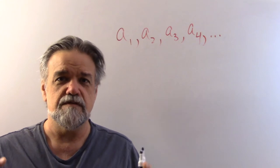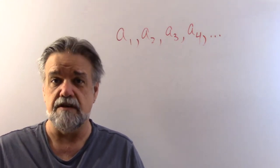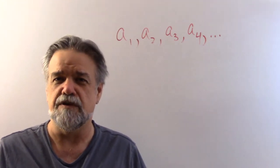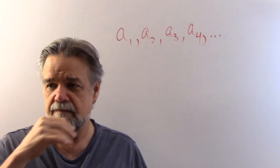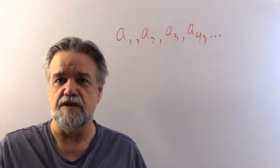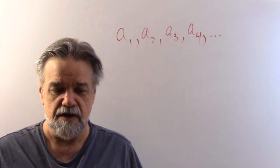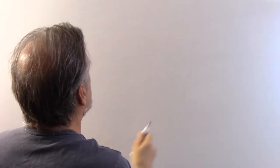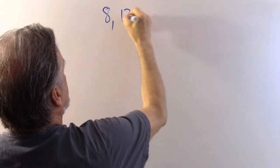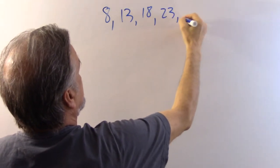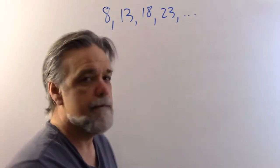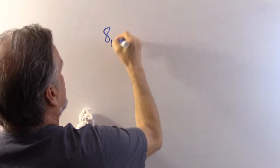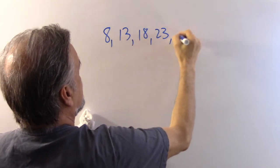Now sequences can be defined explicitly, or they can be defined recursively. That's the main distinction I want to make today: the difference between an explicit formula for a sequence and a recursive formula for a sequence. So let me just give you an example. Let's say we have the sequence 8, 13, 18, 23, et cetera.